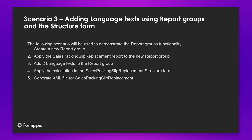And again we will use a scenario to demonstrate this functionality — we will add language texts using report groups, and we also need to use the structure form as well. The report groups functionality can be broken down into five steps: firstly we will create a new report group, then apply the sales packing slip replacement report to the new report group, add two language texts to the report group, apply the calculation in the sales packing slip replacement structure form to retrieve those language texts, and then generate the XML file to see what that looks like.